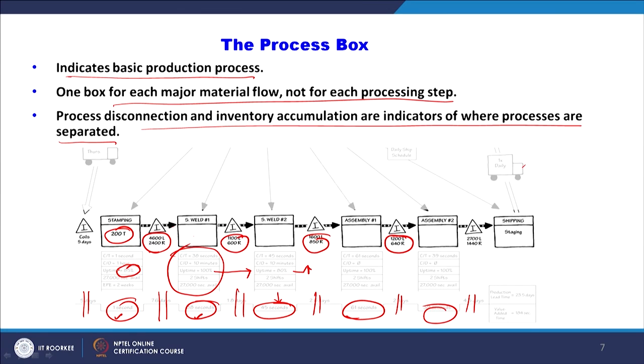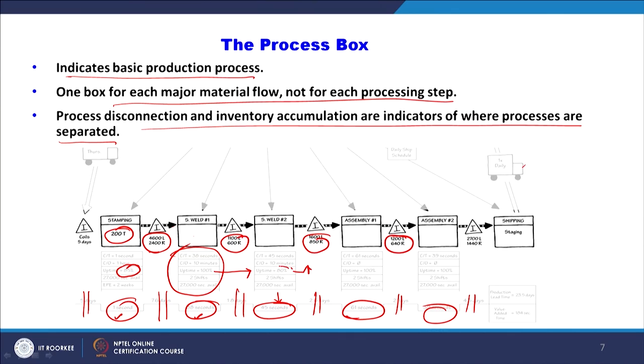In this entire process, wherever some production process takes place it is a value-added activity, and wherever you only have transportation from one stage to another it is a non-value-added activity. At the stamping stage, the uptime is 85 percent, and at the second welding uptime is 80 percent — so there is scope to increase uptime at those stages. Even in your value-added activities there is scope for improvement: improving uptime can reduce the lead time and increase the output rate.